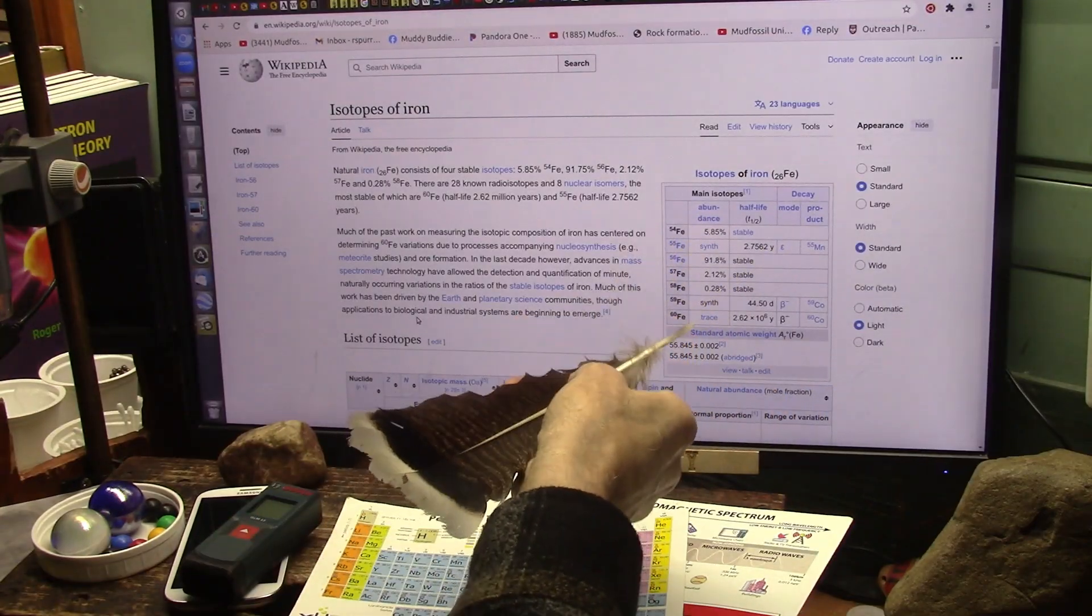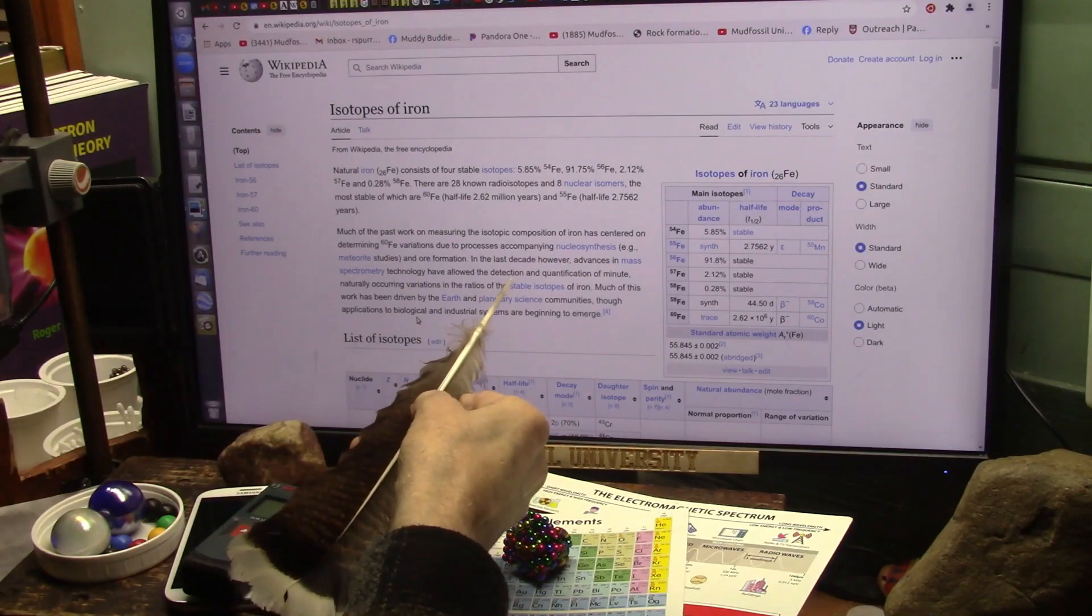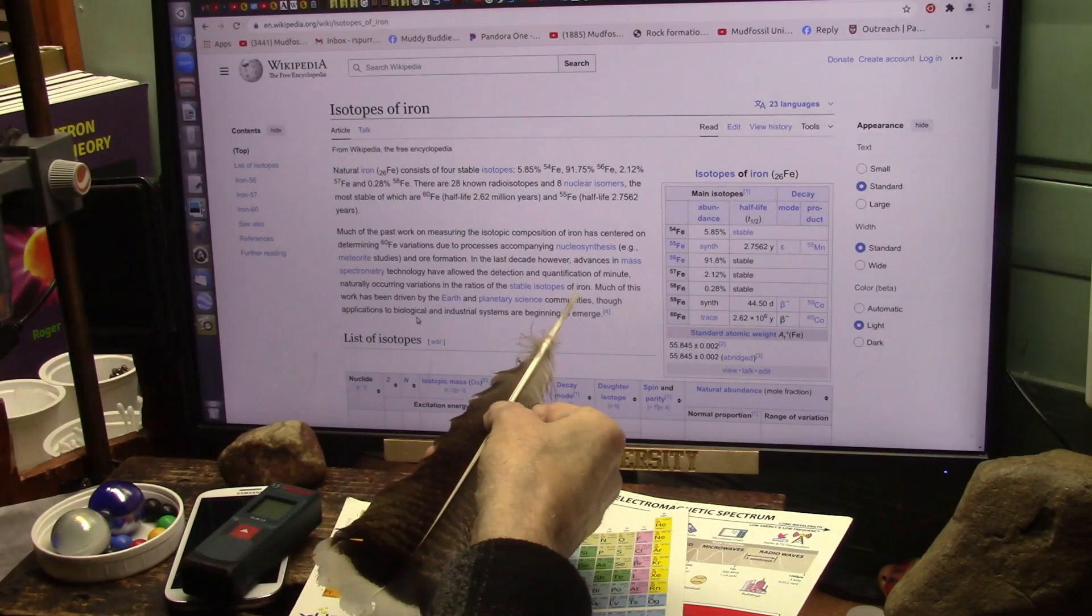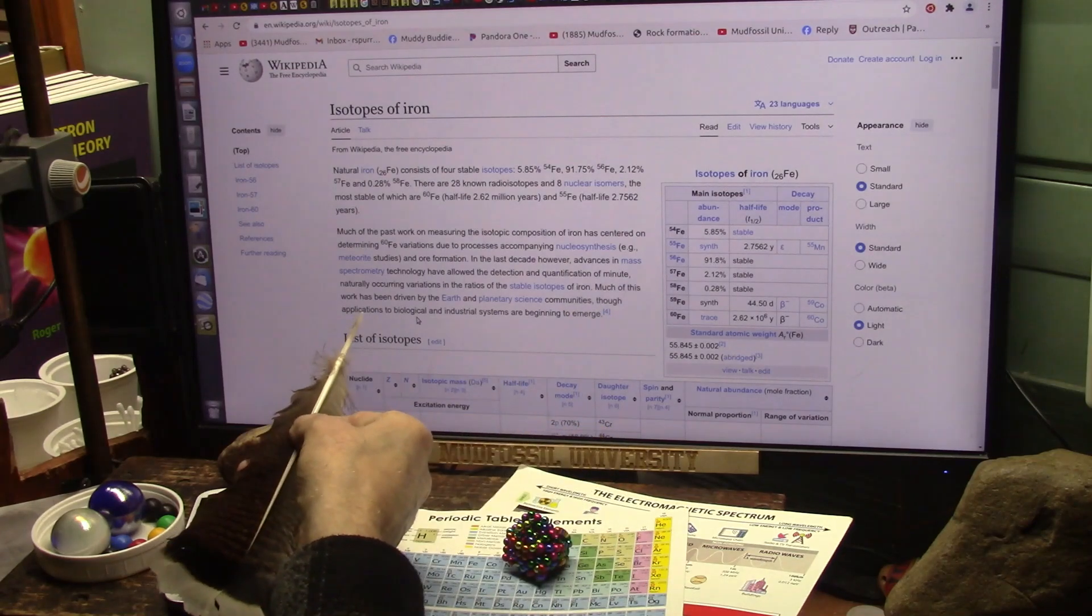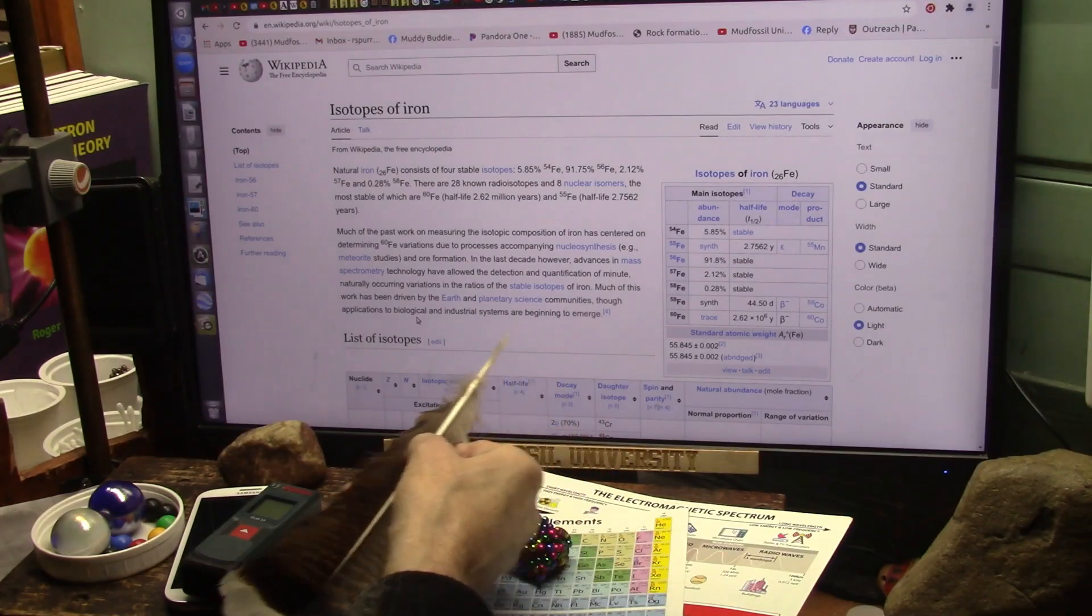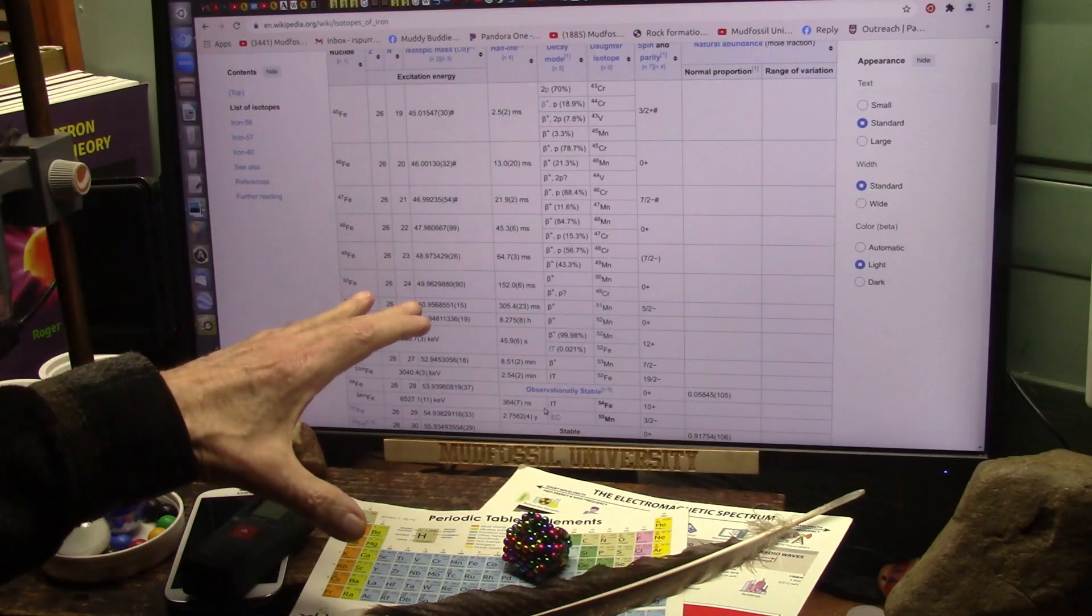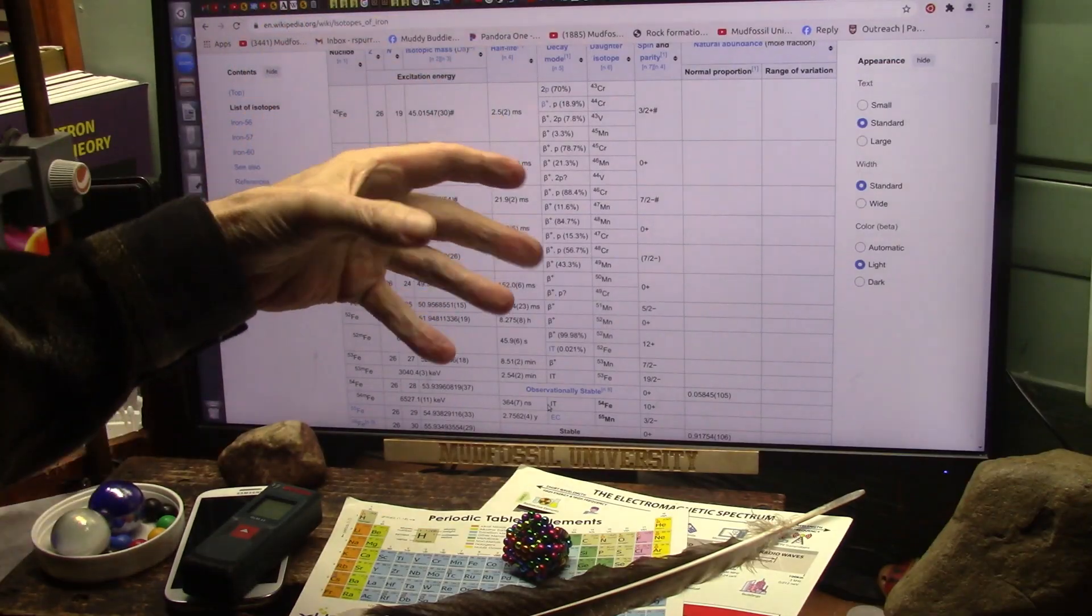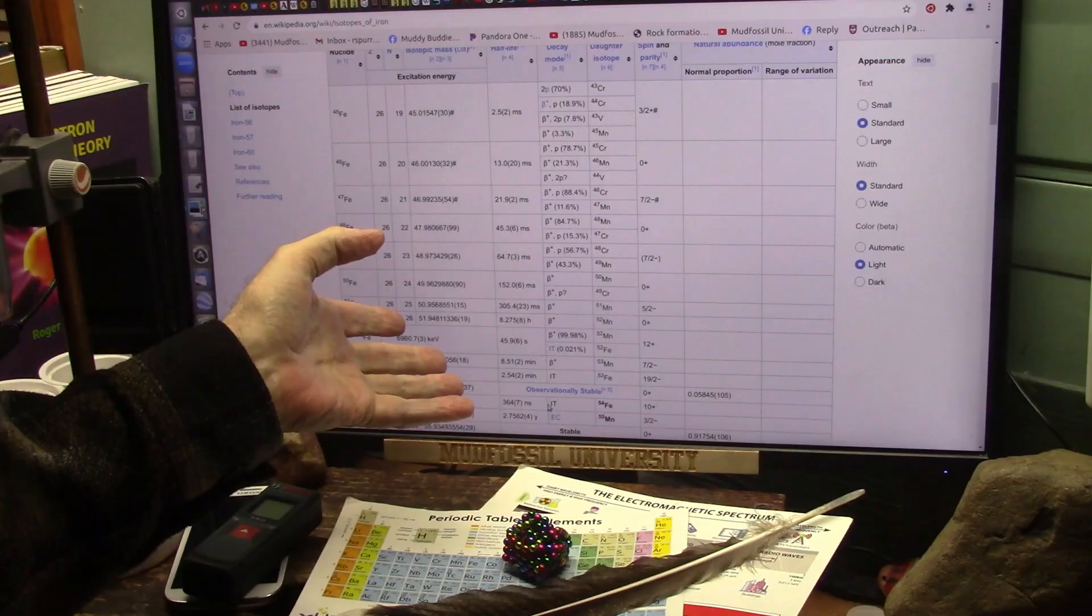Okay, they're talking about most of the work on iron was looking at meteorites, how they think they change, they're coming through and changing their states. But recently mass spectrometry have allowed the detection and quantification of minute naturally occurring variations in stable isotopes of iron. Much of this was driven by earth and planetary science communities. Those applications to biological, this is where I'm going, and industrial systems are beginning to emerge. I'm looking for the biological. These are the different states of iron that are changed by enzymes in the body of a creature to create food, immunities, all that stuff.